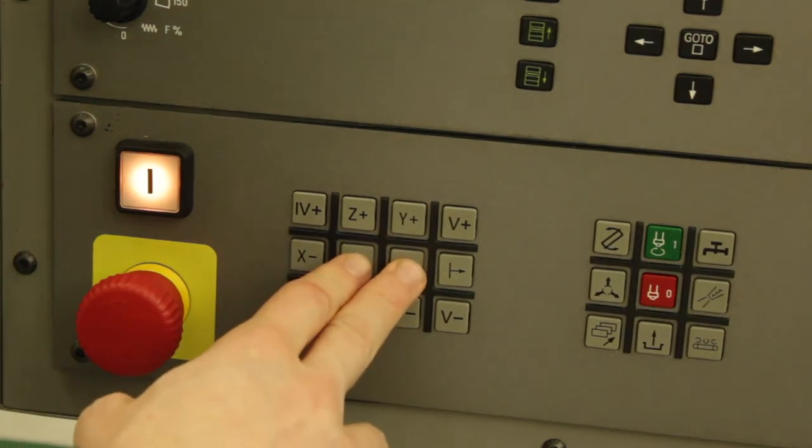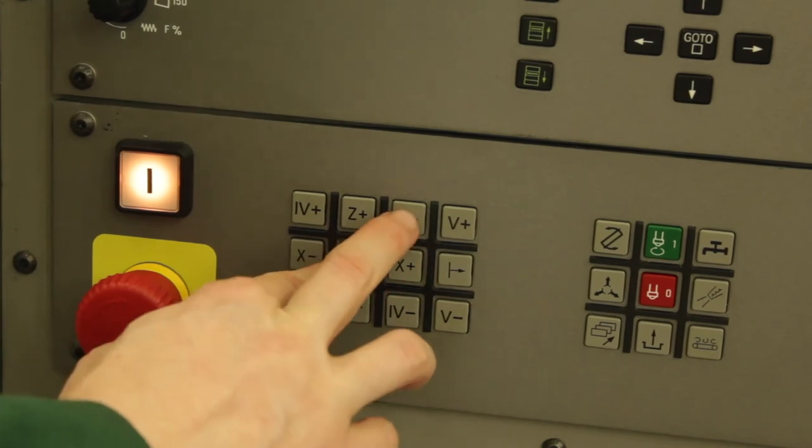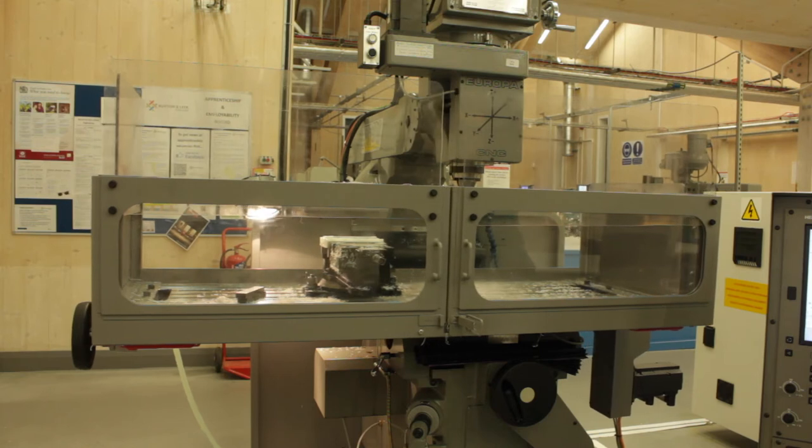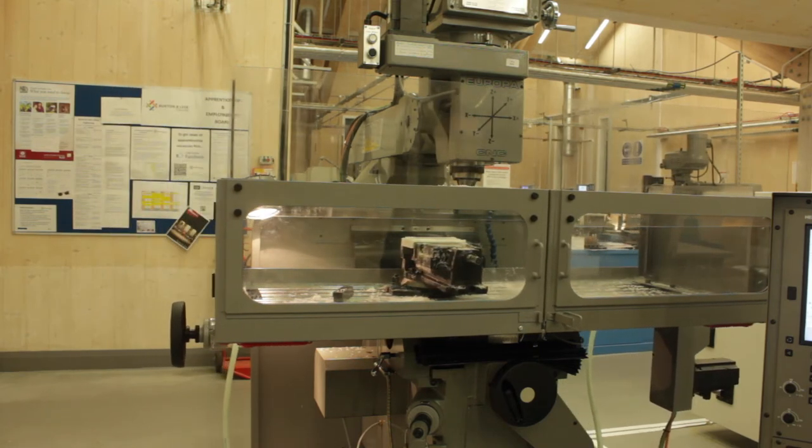Next we'll need to use the rapid jog buttons to move the table back into position. To do that press the middle rapid button and also the relevant direction and that'll move the axes directly back into a position where we can put in a tool.